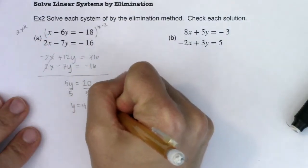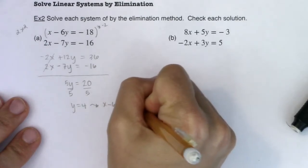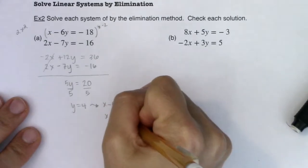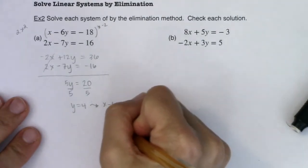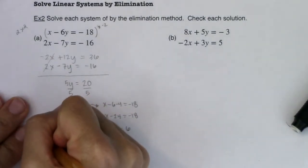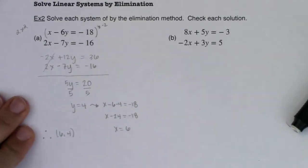So I know x minus 6 times 4 should be equal to negative 18. So that's saying x minus 24 should be equal to negative 18. And when I add 24 to the other side, I get that x is equal to 6 and you see us arriving at the exact same ordered pair of 6 comma 4.